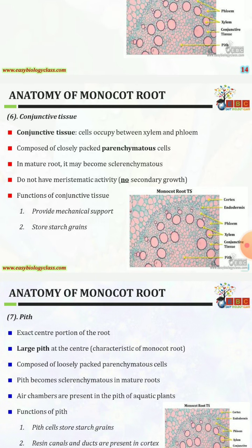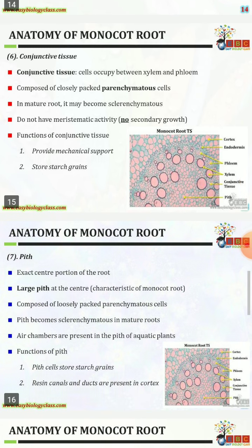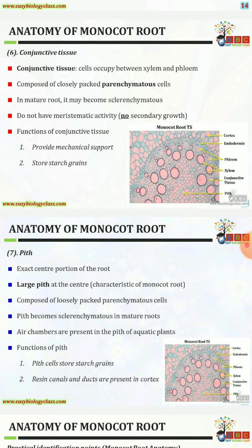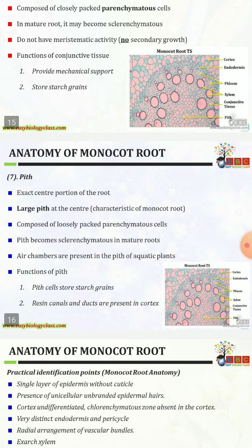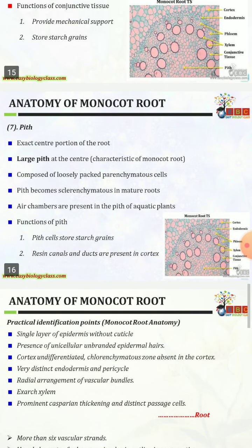The sixth part is the conjunctive tissue. Conjunctive tissues are cells that occupy the space between xylem and phloem. They are composed of closely packed parenchymatous cells; in mature roots they may become sclerenchymatous. They do not have meristematic activity, meaning there is no secondary growth. Functions: provide mechanical support and store starch grains.